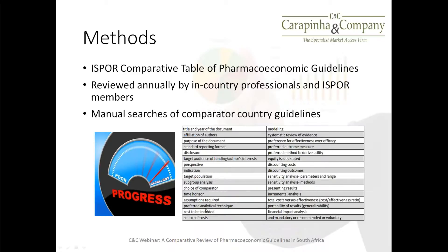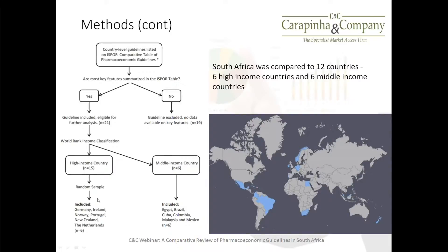These key features are updated on an annual basis by in-country professionals, ISPOR members, and staff members. We developed a flowchart to identify a group of countries — 21 countries were eligible for further analysis. We broke that down into World Bank income classification: 15 high-income and six middle-income countries. We chose all six middle-income countries: Egypt, Brazil, Cuba, Colombia, Malaysia, and Mexico. We then took a random sample of the high-income countries, including Germany, Ireland, Norway, Portugal, New Zealand, and the Netherlands — six high-income and six middle-income countries, all compared to South Africa.